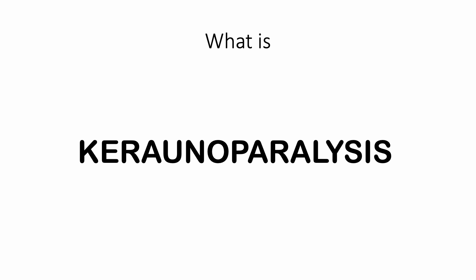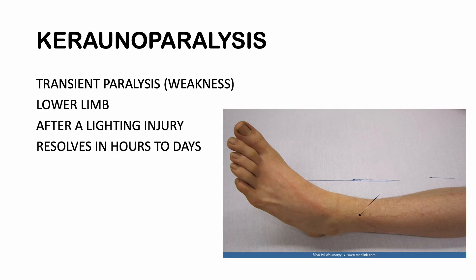Keraunoparalysis is a transient weakness or paralysis of the lower limbs — especially the lower limbs — after a lightning injury. It resolves in hours to days. This is a diagnosis of exclusion, so you are going to keep the spinal immobilization and get the imaging done.